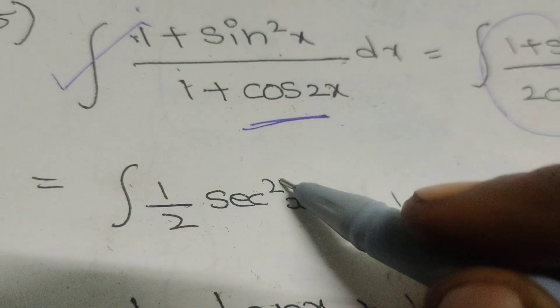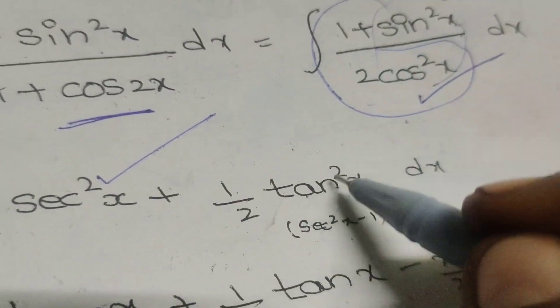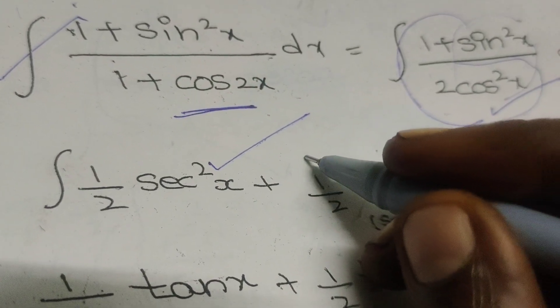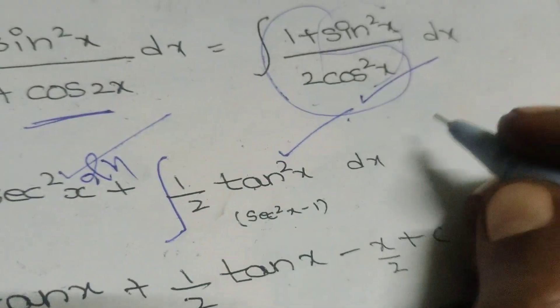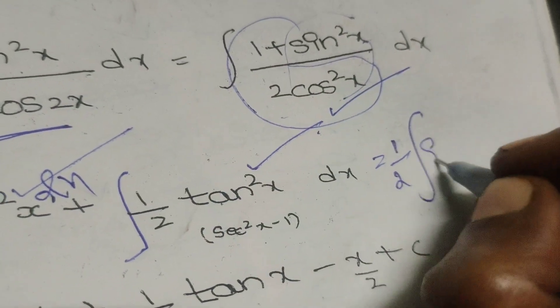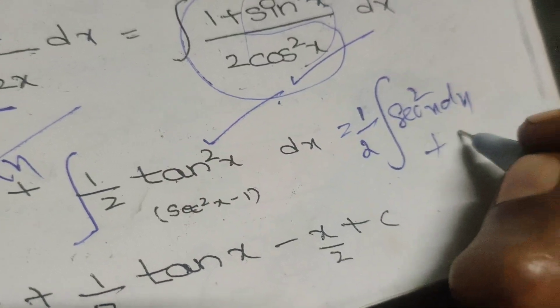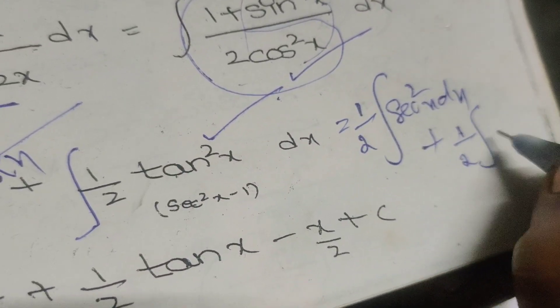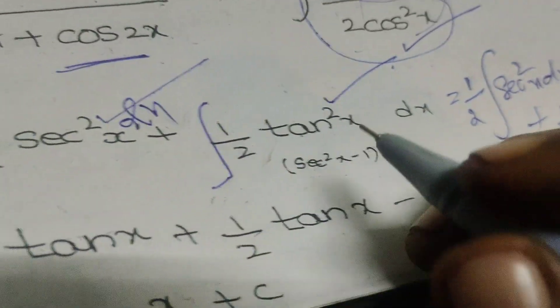We split this as: 1/(2cos²x) gives (1/2)sec²x, plus (1/2) · sin²x/cos²x gives (1/2)tan²x. Writing the integration separately: (1/2)∫sec²x dx plus (1/2)∫tan²x dx.